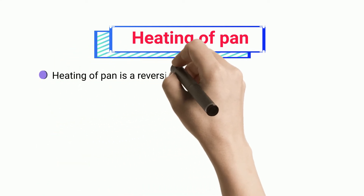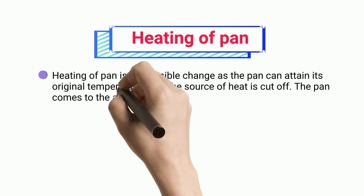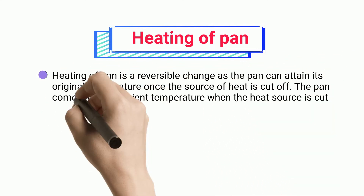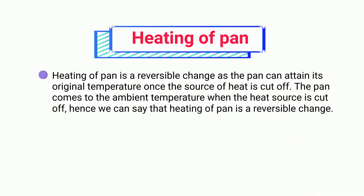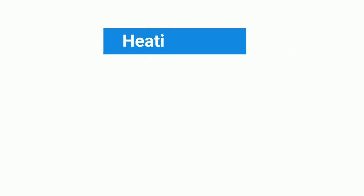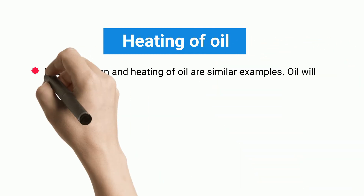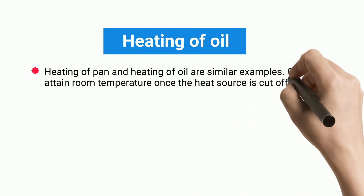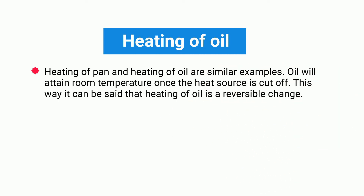Heating of Pan: heating of a pan is a reversible change as the pan can attain its original temperature once the source of heat is cut off. The pan comes to ambient temperature when the heat source is cut off. Hence, heating of pan is a reversible change. Heating of Oil: heating of pan and heating of oil are similar examples. Oil will attain room temperature once the heat source is cut off. This way, heating of oil is a reversible change.